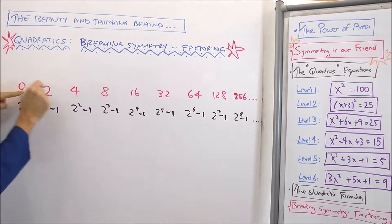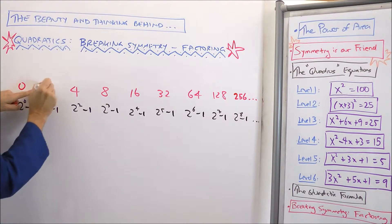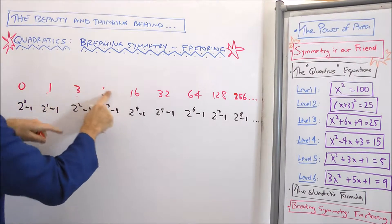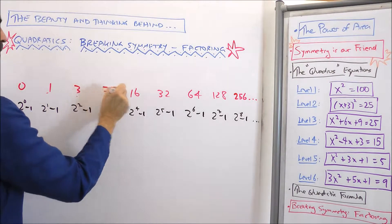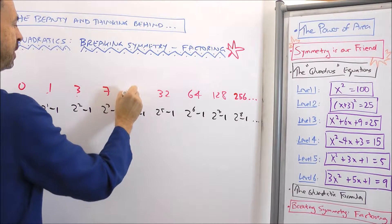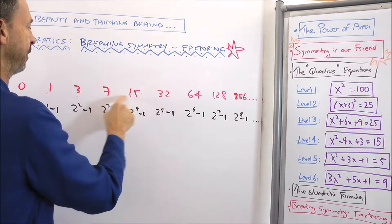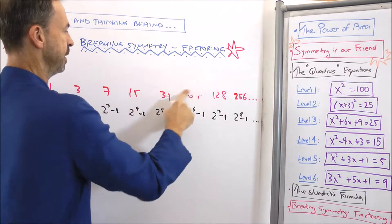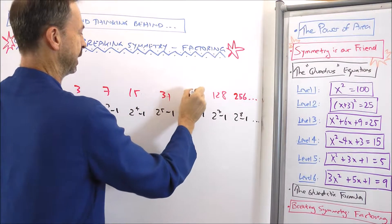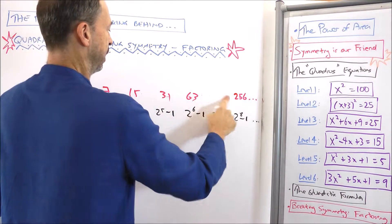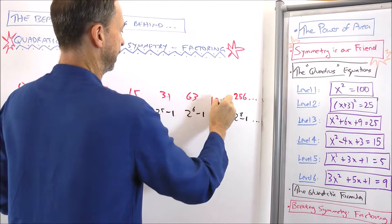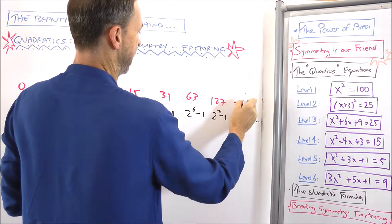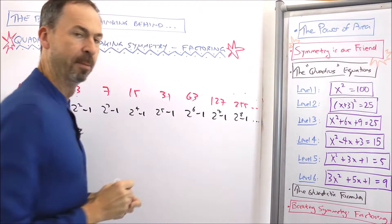That will now give me this list: 1 becomes 0, 2 becomes 1 less, 4 becomes 1 less, and so on. So I'm getting the numbers 7, 15, 31, 63, 127, 255, and so on.